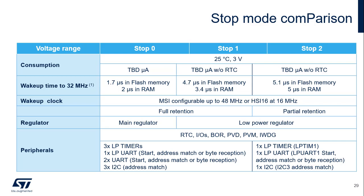When comparing stop modes, Stop 0 mode has the highest consumption as it keeps the main regulator on. Stop 1 mode consumption is higher than Stop 2 mode consumption, but the wake-up time is shorter and the number of active peripherals is higher. Stop 2 mode only provides partial retention, including all memories, both CPUs, and some peripherals.